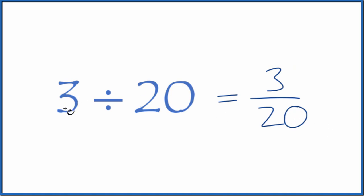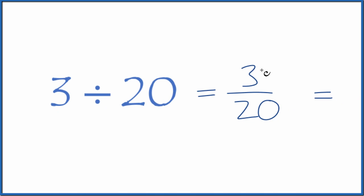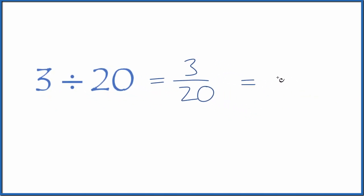We could also divide 3 by 20 on our calculator. So 3 divided by 20, that gives us 0.15. So we have our fraction and then we have a decimal for 3 divided by 20.